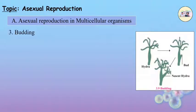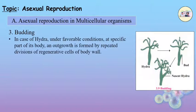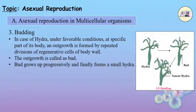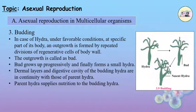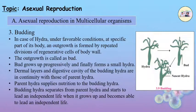3. Budding. In case of hydra, under favourable conditions, at specific parts of its body, an outgrowth is formed by repeated divisions of regenerated cells of the body wall. This outgrowth is called a bud. The bud grows progressively and finally becomes a small hydra. The dermal layers and digestive cavity of the budding hydra are in continuity with those of the parent hydra. The parent hydra supplies nutrition to the budding hydra until it grows up and separates to lead an independent life.